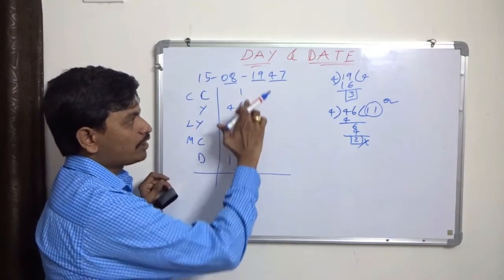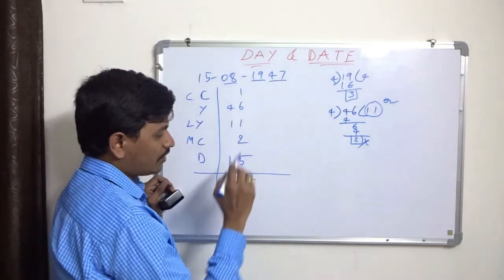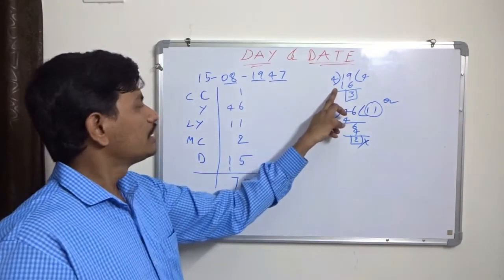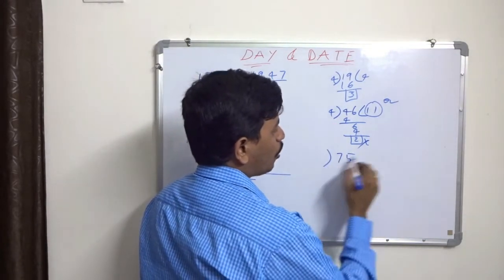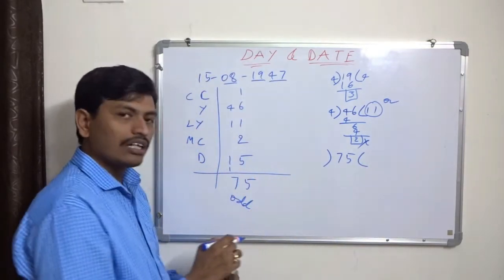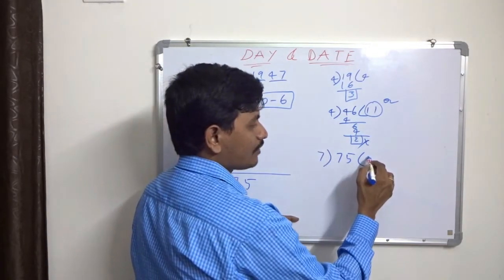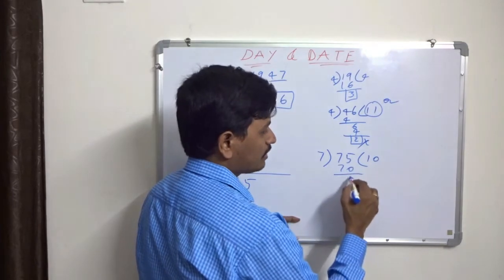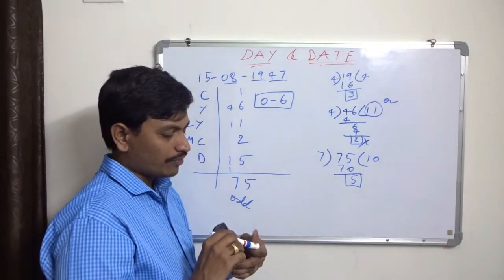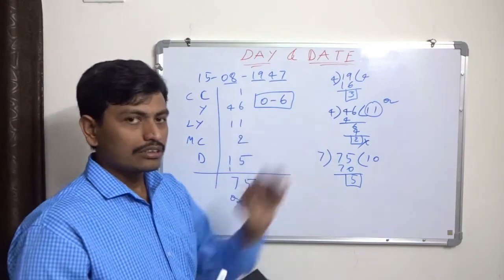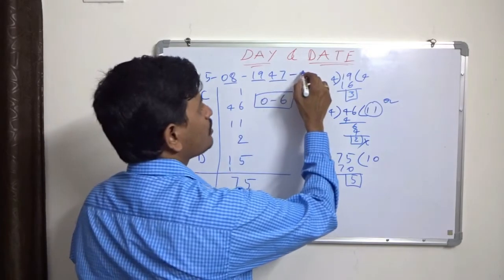Now we add: century code 1 + year 46 + leap years 11 + month code 2 + date 15 = 75. We got 75 odd days. Odd days can only be 0 to 6, so we divide 75 by 7: 7 × 10 = 70, remainder is 5. The remainder is 5. Day code 5 is Friday — counting from Monday: Monday, Tuesday, Wednesday, Thursday, Friday. So our Independence Day falls on Friday.